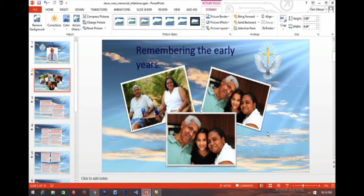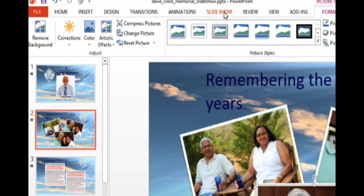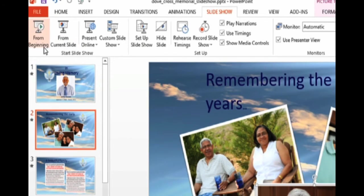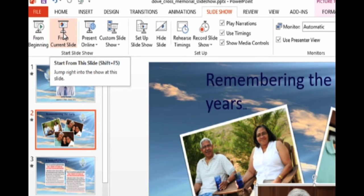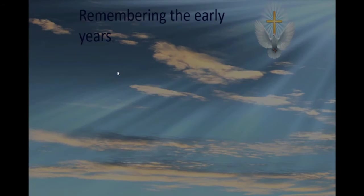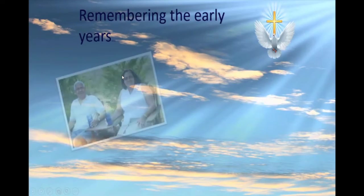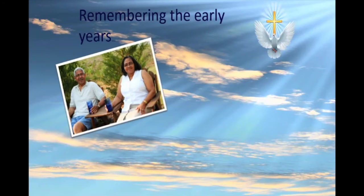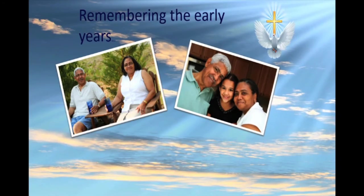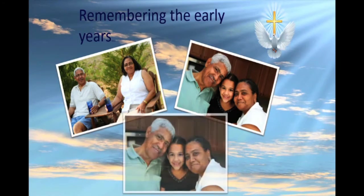Want to add another picture? You'll need to know which picture animates last. To find out, let's play the slide. To play the slide, choose Slideshow at the top. Choosing From Beginning would let you see your entire show. Right now, we just want to see the current slide, so choose From Current Slide. You'll see a preview of the animation — on this slide, the bottom picture animates last. To end the preview, click Escape.